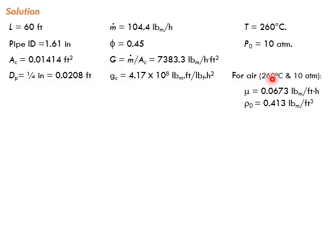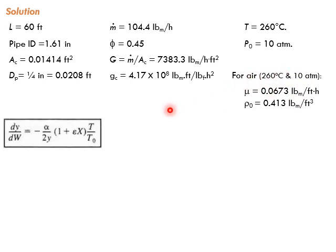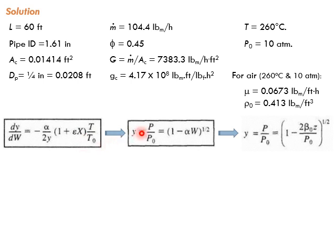For air these are the properties of air at the entrance. Let's use the Ergen equation. We say in this case the temperature is constant, there is no reaction, so the total number of moles is not changing, so ε is zero. Therefore we can integrate this equation analytically to get this equation.